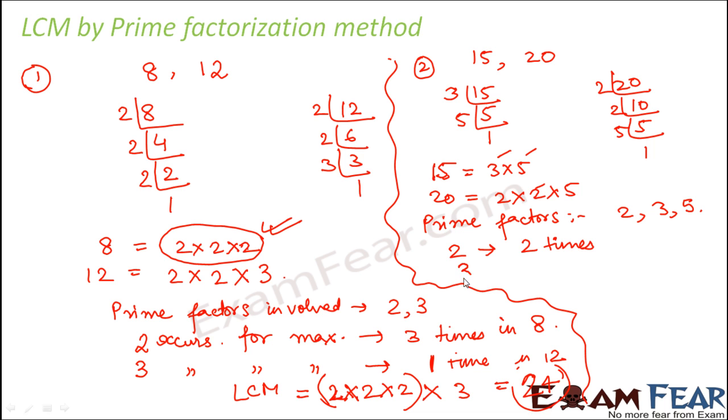What about 3? 3 occurs maximum 1 time in 15 because 3 does not occur in 20 at all.